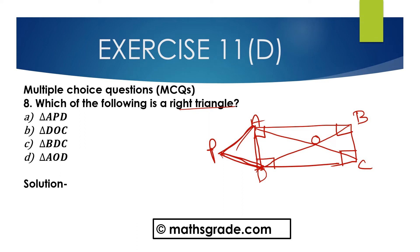Which of the following is a right triangle? In this figure with points A, B, C, D: triangle APD is not a right angle triangle. Triangle DOC — this is a right triangle. Triangle AOD — checking this as well. So option C is the correct option.